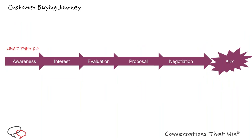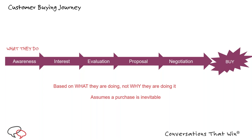The second approach organizes around what marketers call the customer buying journey — delivering information to meet the needs of the customer at each stage. It's more buyer-centric, which is important, but there are challenges. First, it's based on what the customer is doing, not why they're doing it — you're trying to anticipate action without insight into their motivation. Second, it assumes the purchase is inevitable, but research shows that sixty percent of the time, qualified sales opportunities end up as no decision, with customers sticking with what they've already been doing.